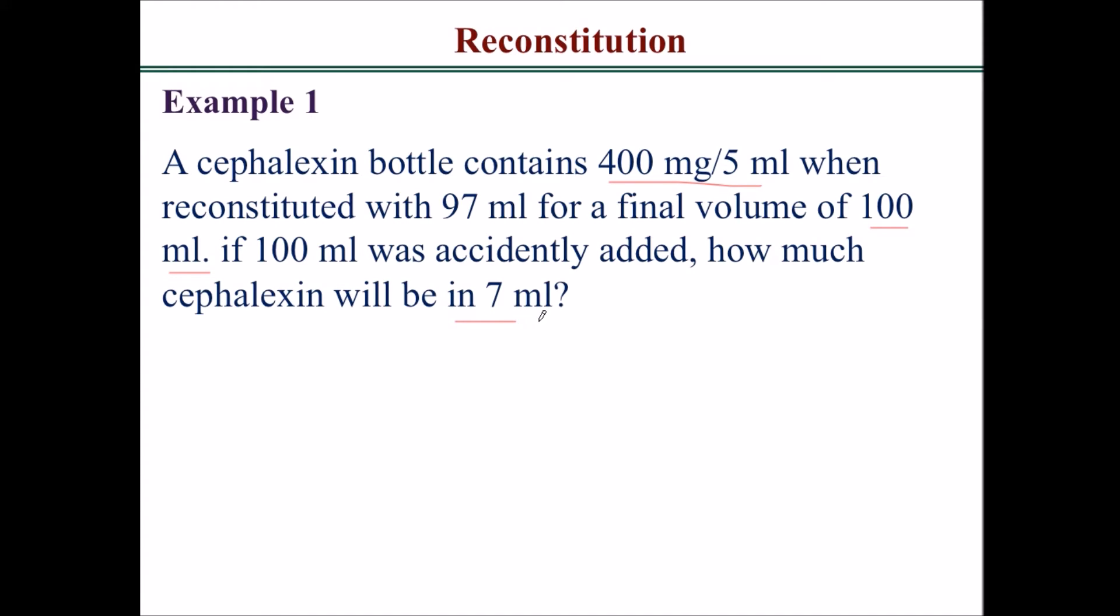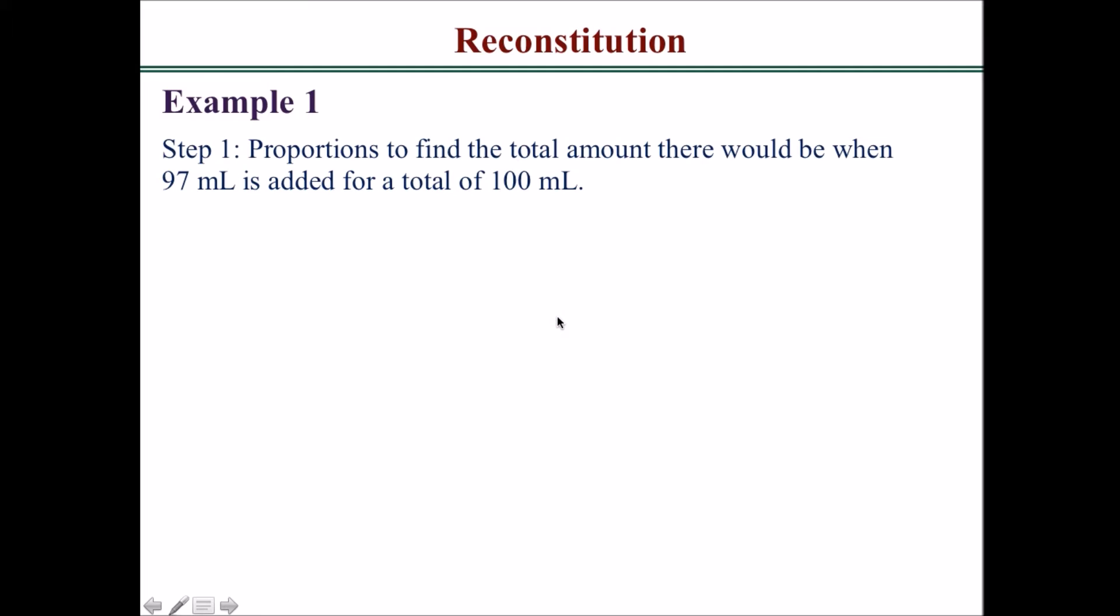Let's move on to step one. You want to do proportions to find the total amount there would be when 97 ml is added for a total of 100 ml. When that is done, you'd get a concentration of 400 milligrams for 5 ml, and you'd have a total of 8,000 milligrams.